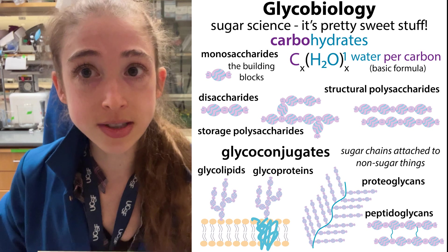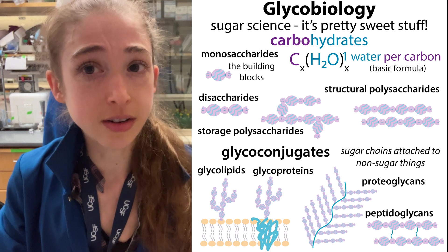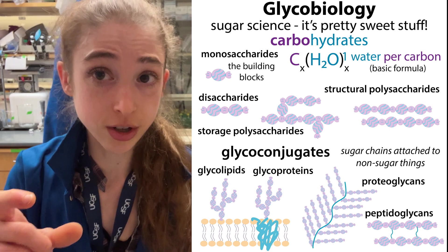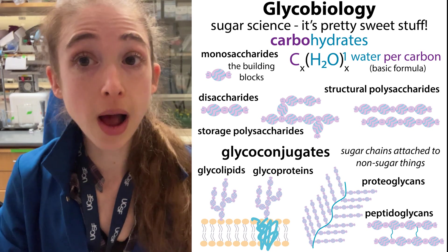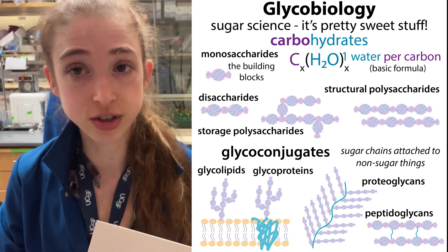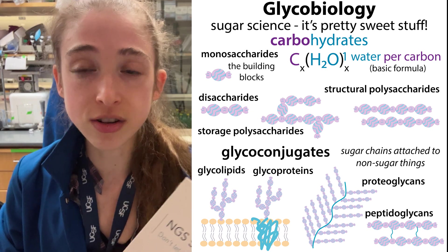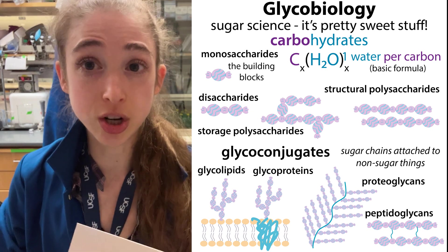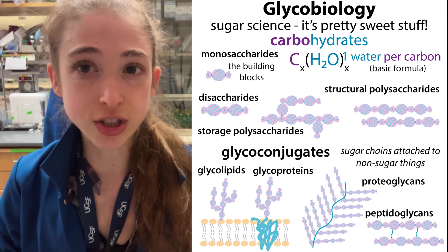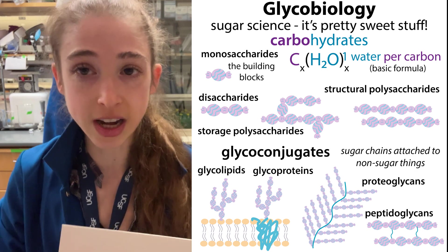You'll also see the term polysaccharide. Remember, oligosaccharides are those short sugar chains — well, a polysaccharide is going to be a long sugar chain. These are things like starch and glycogen, which are really good for energy storage because you have these long chains.